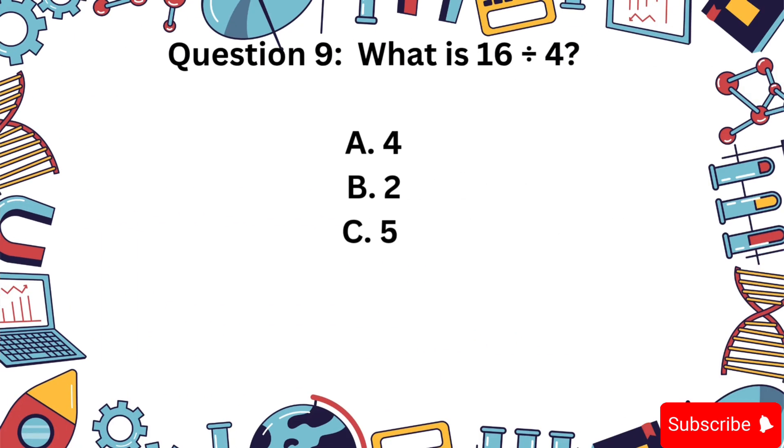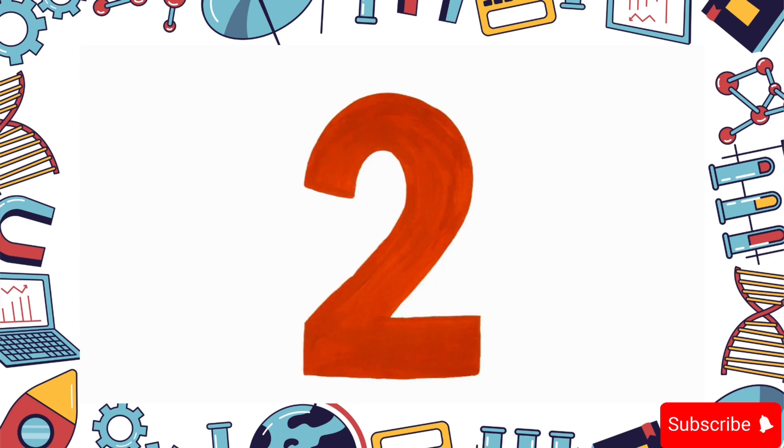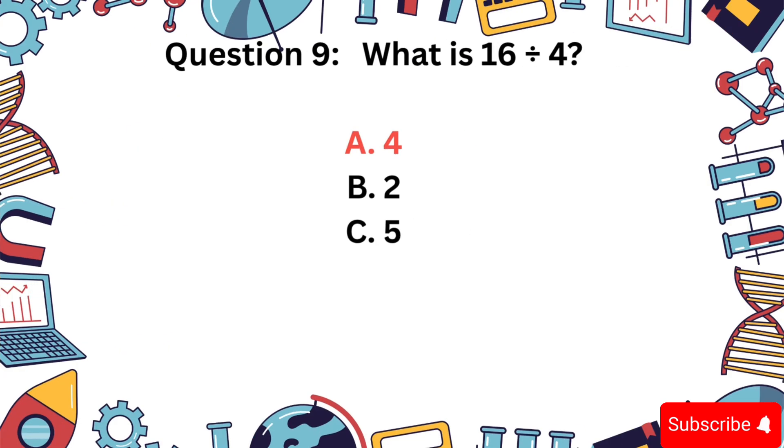16 divided by 4. A, 4, B, 2, C, 5? The answer is A, 4.